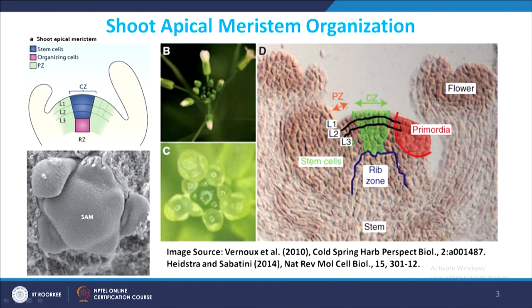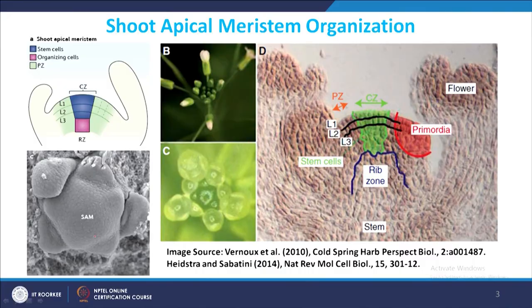One important point is that both the process of meristem maintenance and the process of organogenesis are highly coordinated and occur simultaneously. If meristematic activity exceeds differentiation activity, the meristem size will keep increasing. On the other hand, if differentiation activity is greater, the meristem will be consumed early. Under both abnormal conditions you will see abnormal growth and development. So during the process, both activities have to be coordinated.